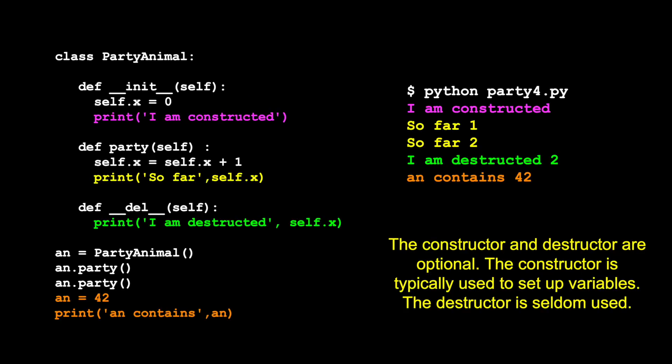Here's a bit of code. It's our party animal, and a lot of it is the same as what we've been doing so far. We have this variable x, and the constructor has a special name: underscore, underscore, init, underscore, underscore. We pass in the instance of the object, self. In this one, all we're going to do is print out that you're constructed. Here's this code that we've had before. Now we have underscore, underscore, del. Then we pass in self, and then we'll just print out that we're being destructed and what the current value of x is for that particular instance.